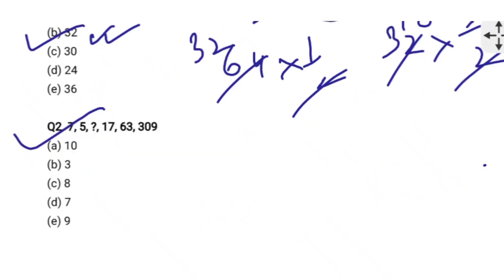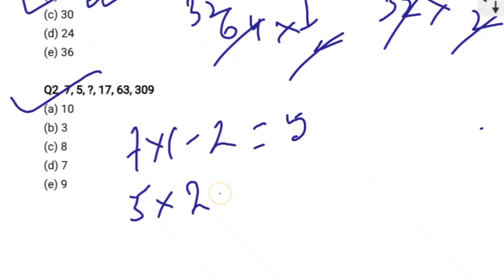Let's see question number 2. To find out the question mark from this series, we will do the trick like that: 7 into 1 minus 2 is equal to the next term 5. 5 into 2 minus 3 that is equal to 10. 10 minus 3 equals 7. So we will get the answer 7.